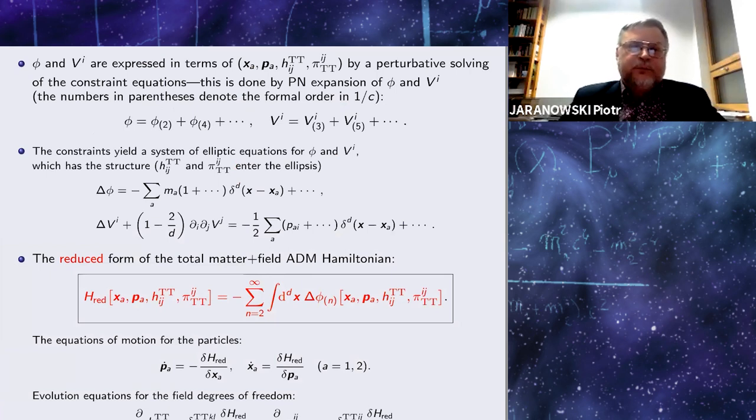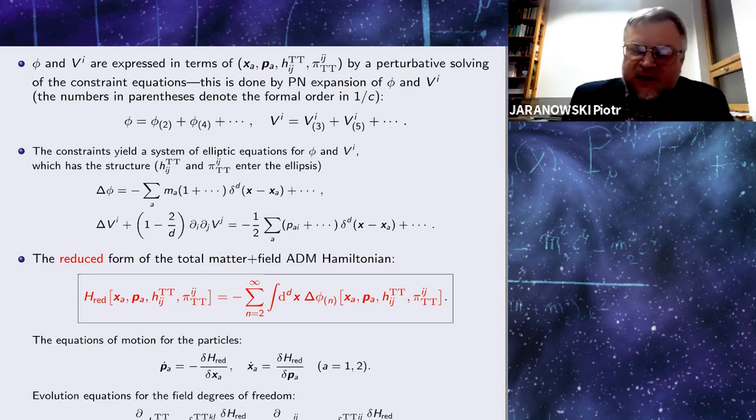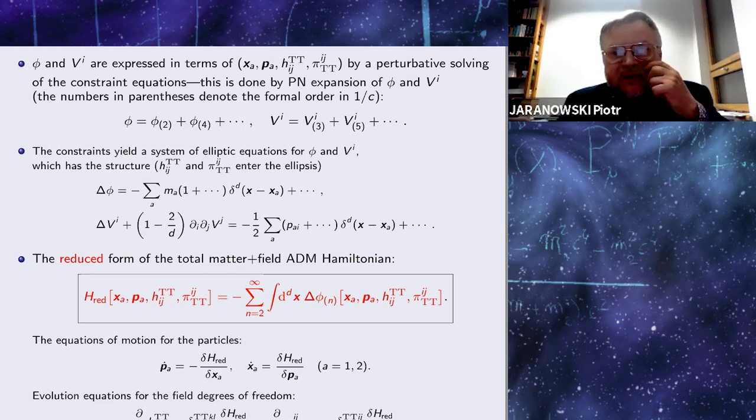The next step is to express the longitudinal degrees of freedom of the gravitational field—that is, the functions phi and vi—in terms of the dynamical degrees of freedom: particles' positions, momenta, and TT variables of the gravitational field. This is done by perturbatively solving the constraint equation within the post-Newtonian setting. We expand the functions phi and vi into post-Newtonian series. The numbers in parentheses denote the formal order in the inverse of speed of light. At the end of the day, the whole multipole field dynamics is described by the reduced form of the ADM Hamiltonian—just the volume integral from the flat Laplacian of the function phi.